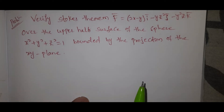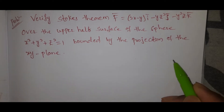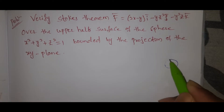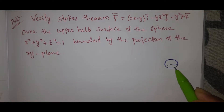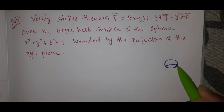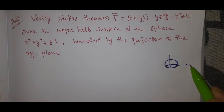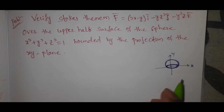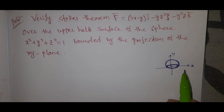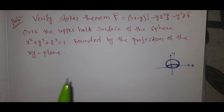We have seen the same problem in the Gauss divergence theorem. We have to see the figure in the 3D room. What we have to see here is a half sphere — specifically the upper half. We will show the xy plane where z = 0, and then we will verify Stokes theorem.